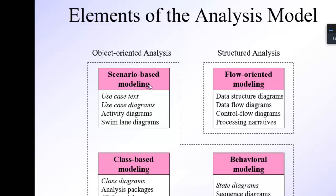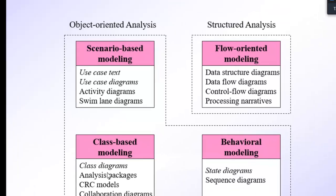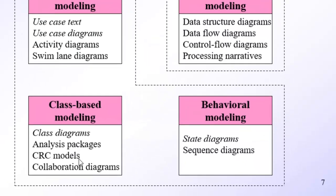In scenario-based modeling, we draw the use case text — a box mentioning all the use cases, meaning all the functions that your software project will perform. Second is the use case diagram, which describes the functionality of the software project. Third is the activity diagram, and fourth is the swim lane diagram. In class-based modeling, we draw class diagrams, analysis packages, and CRC models — Class Responsibility Collaborative models used for designing agile models.